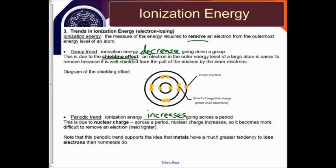For our periodic trend, ionization energy increases going across a period. This is due to nuclear charge. Across a period, nuclear charge increases, so it becomes more difficult to remove an electron, meaning it's held in tighter.